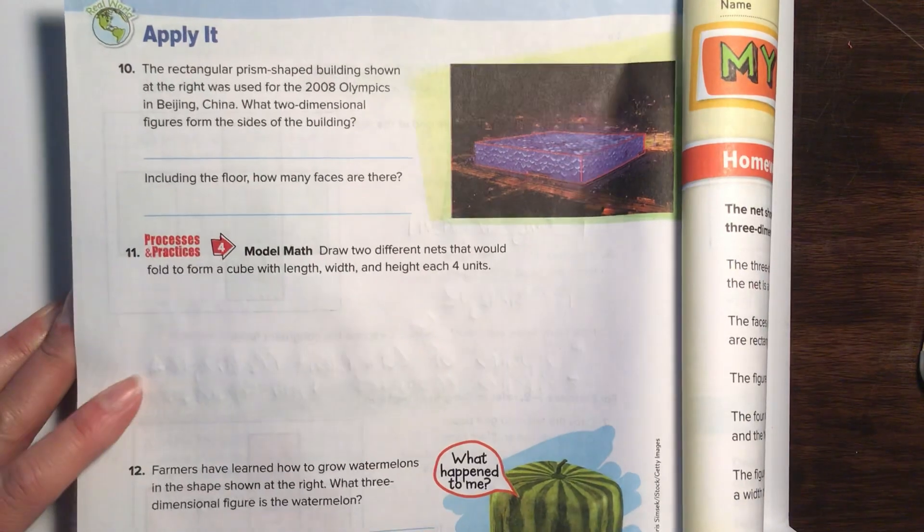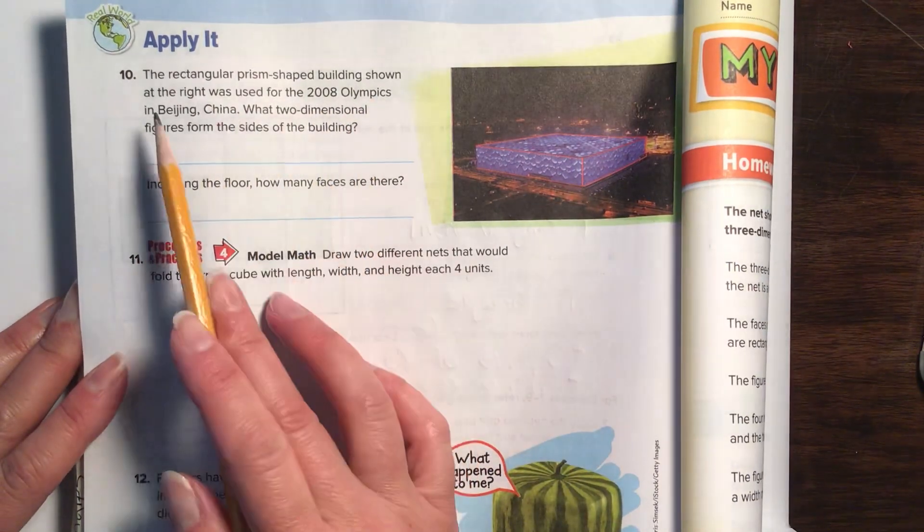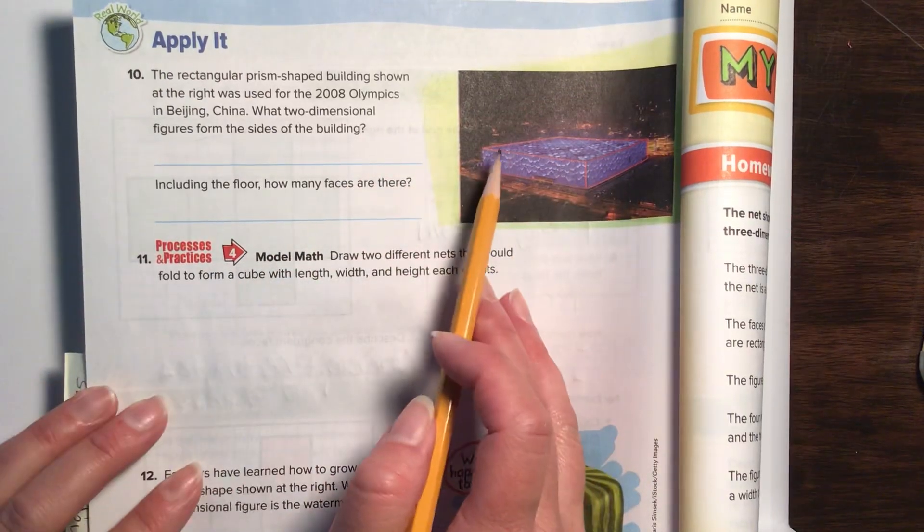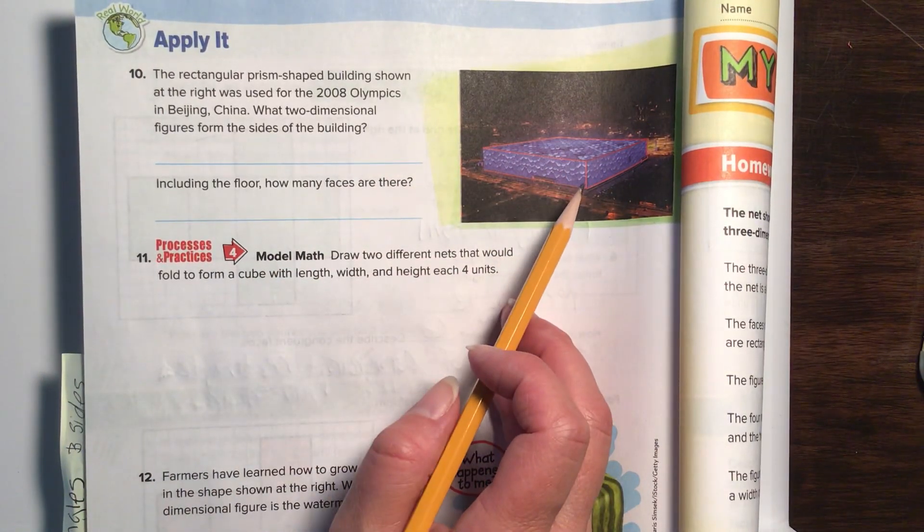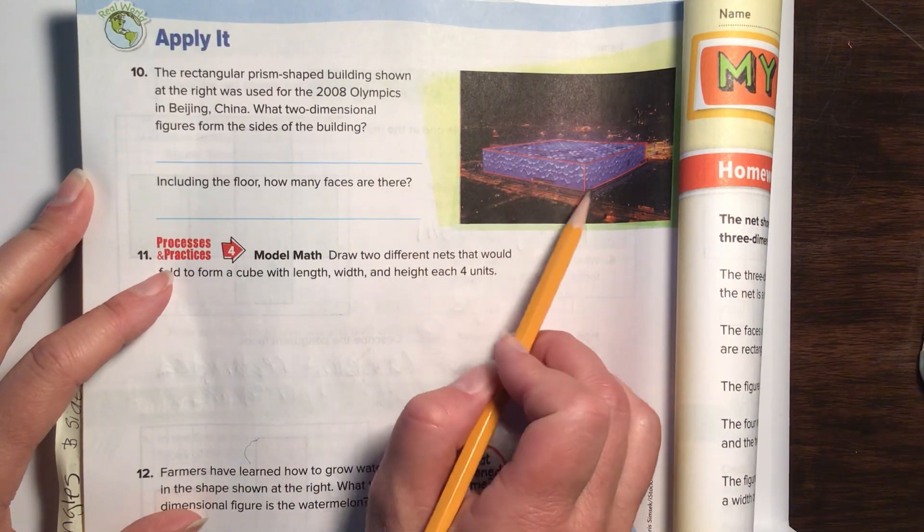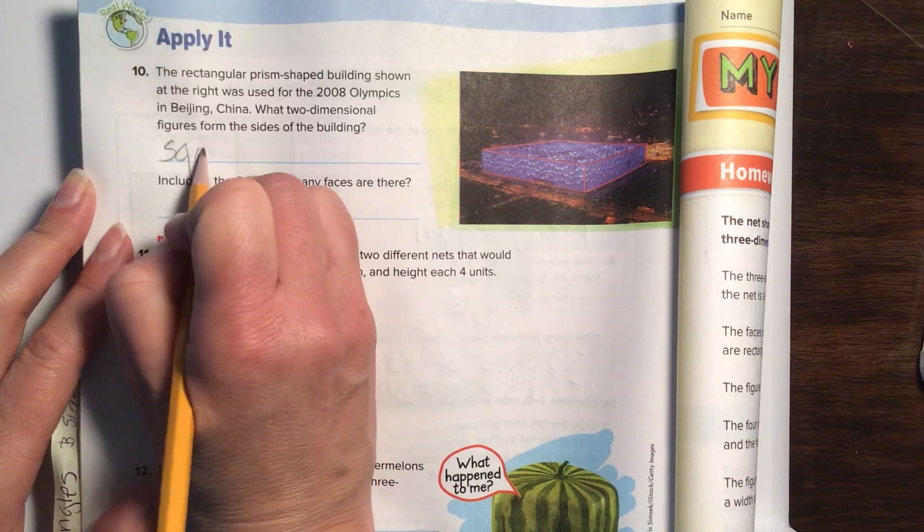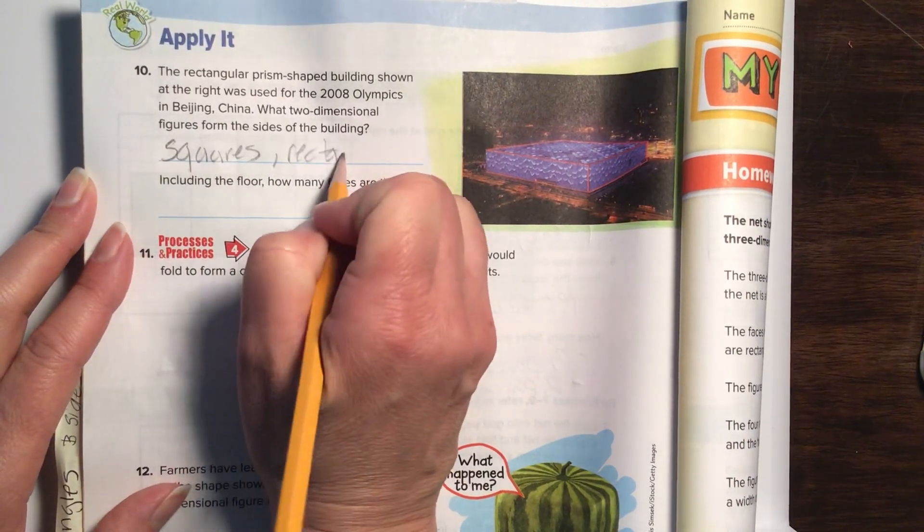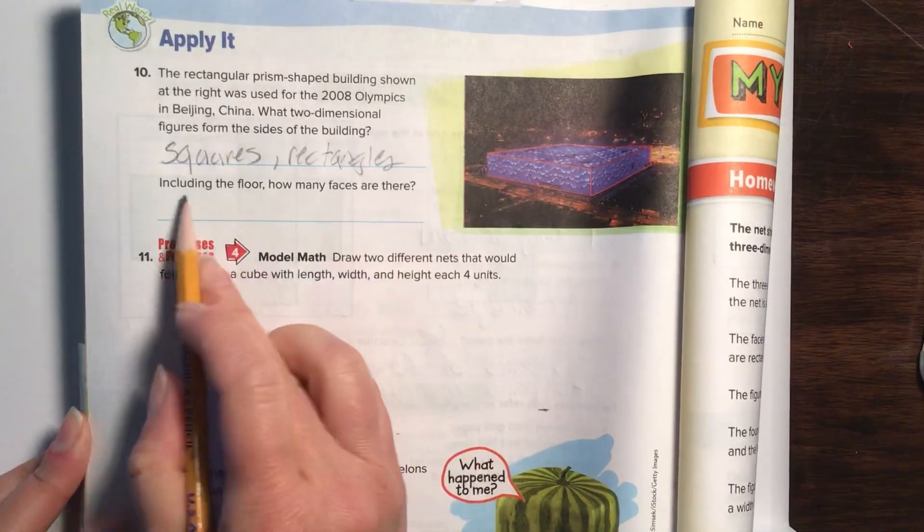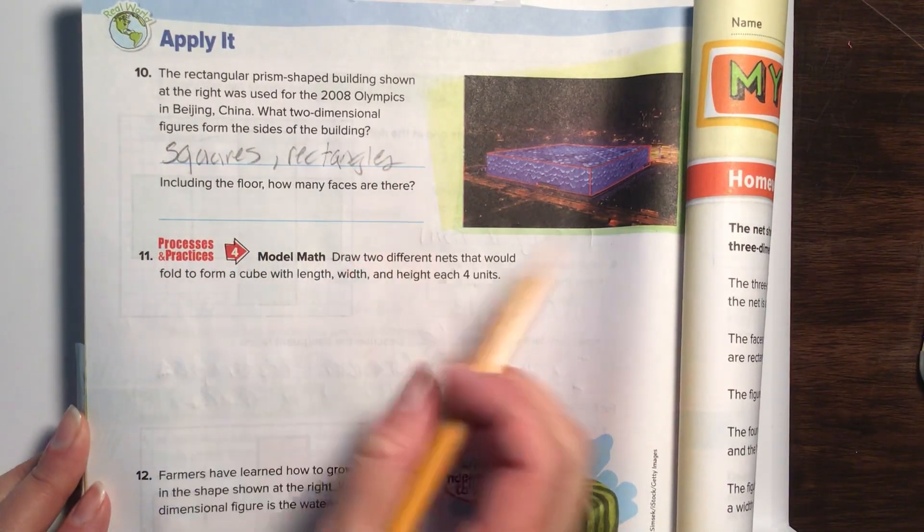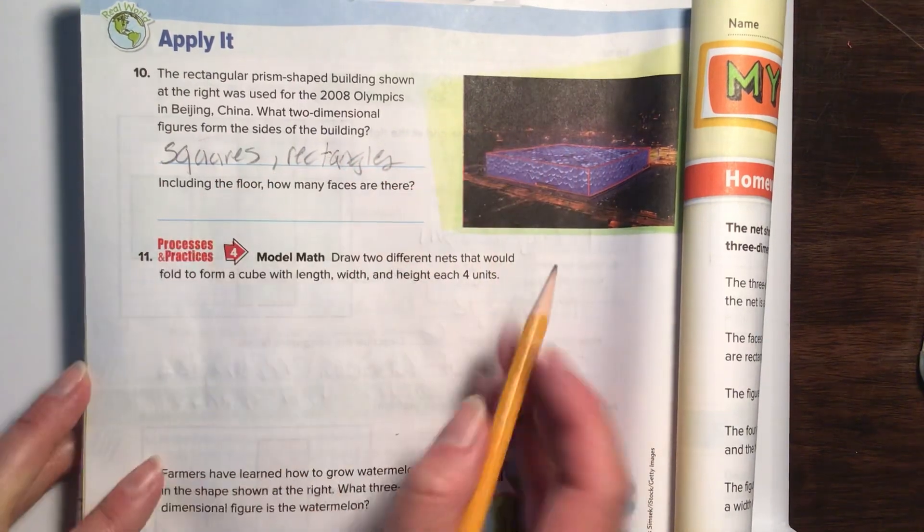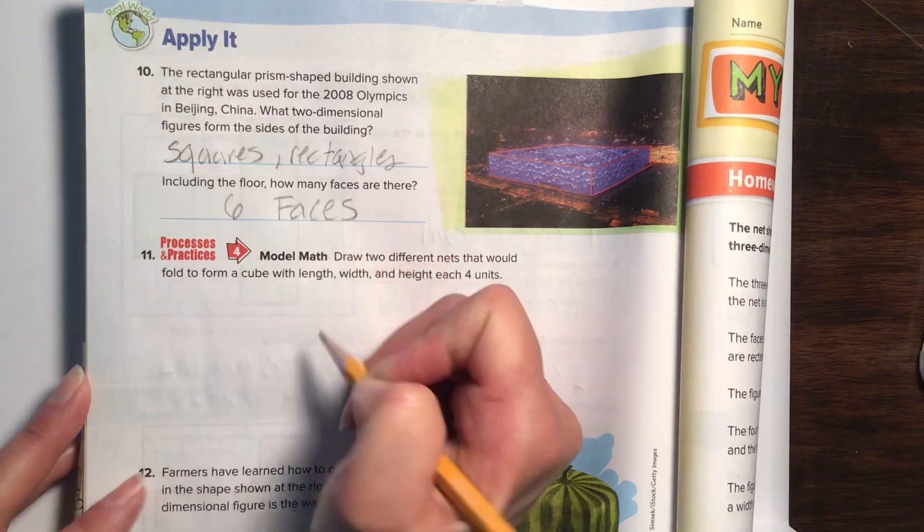The rectangular prism-shaped building shown at the right used for the 2008 Olympics in Beijing, China. What two-dimensional figures formed the side of the building? So, here is the building, and it looks like it's a cube that's really little. Very good. Let's see what it's asking. I see the face of this, I see a square, but on the side, I see a rectangle. So, I'm going to put squares and rectangles. All right, that's a little bit neater so you can read that. Including the floor, how many faces are there? So, if I count the top, one, and remember there's a bottom, two, and you go around the edge, three, four, the back would be five, and this side would be six. Six faces. Very good.